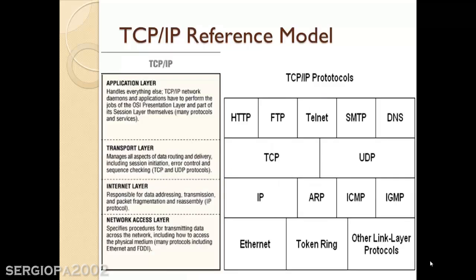Now we're going to talk about the TCP/IP reference model. As I said in the previous video, this is the current standard model used today — the OSI model is really not used. The TCP/IP reference model is simpler; it has only four layers. These layers were created after the protocols were implemented, so the protocols came first and then they defined the layers.